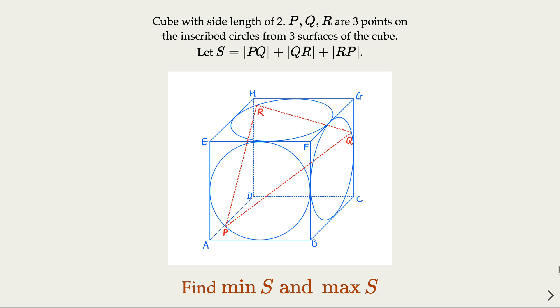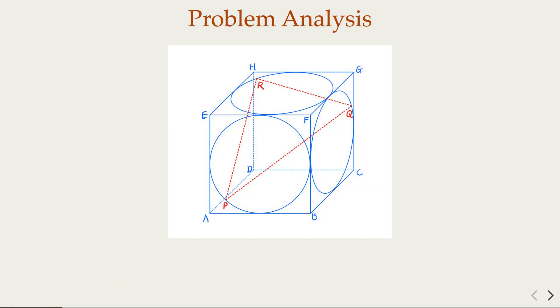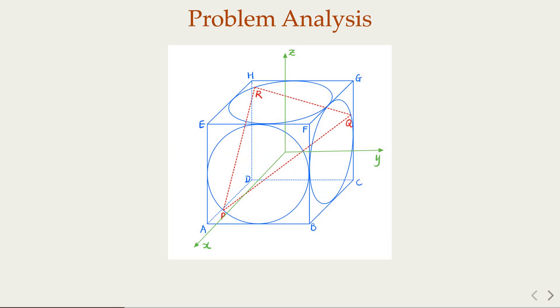So in this case, it is good to set the origin of the coordinate system in the center of the cube. Notice that the cube's side length is 2. The origin here is the center. X, Y, Z are marked in the green axis here. So with this coordinate, the P point would have X, Y, Z, where X is a constant value of 1. Notice that P is going to move around on the unit circle.